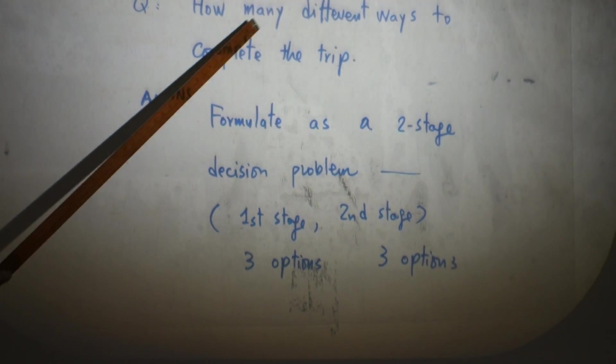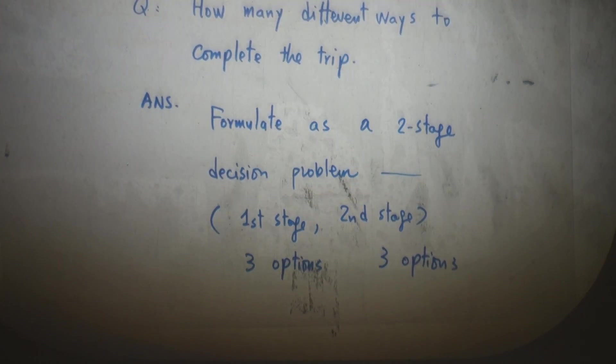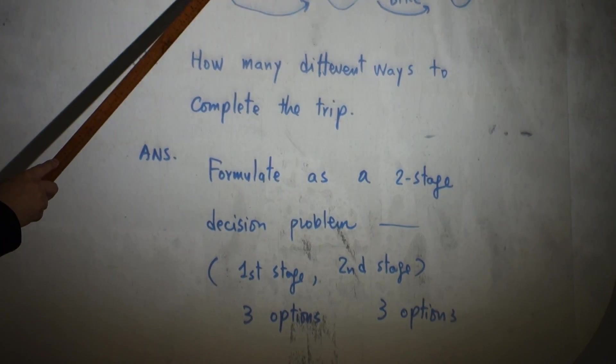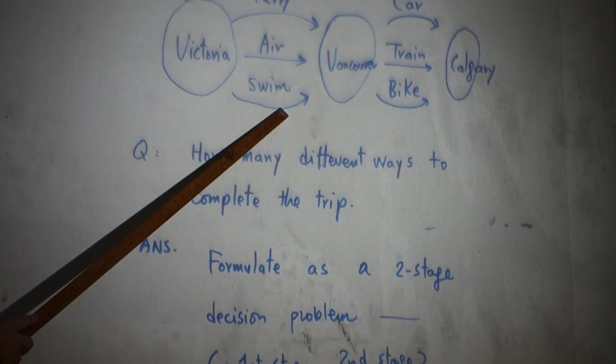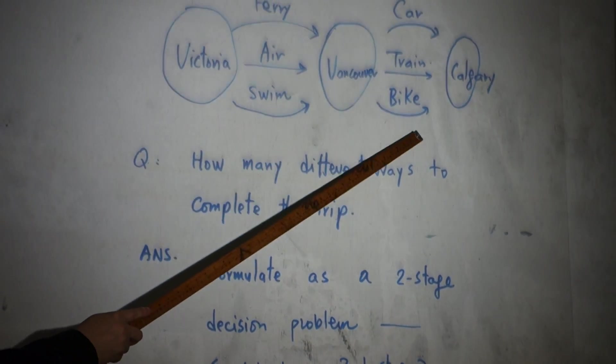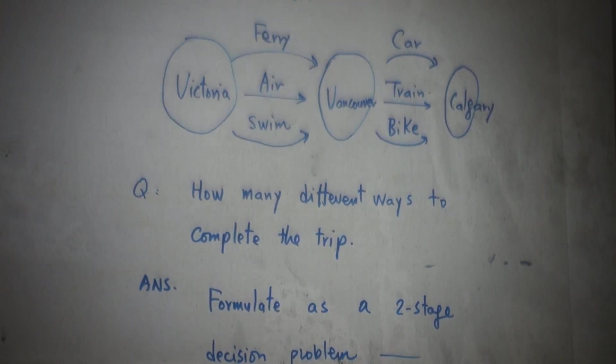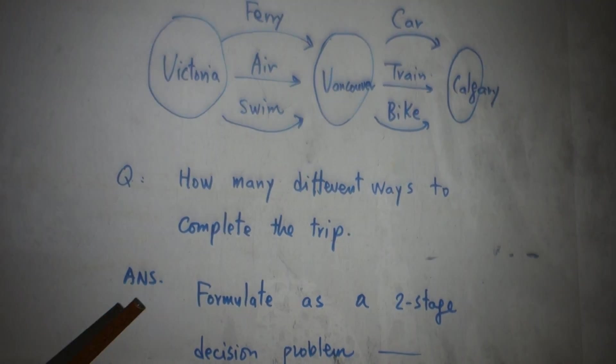How many different ways to complete a trip? As you can see, first stage we have three options: use ferry, take airplane, or swim. Second stage from Vancouver to Calgary, we can either drive a car, take a train, or ride a bike. It's also three different options.